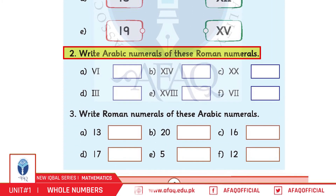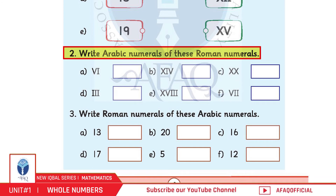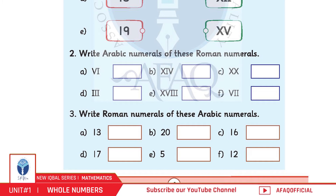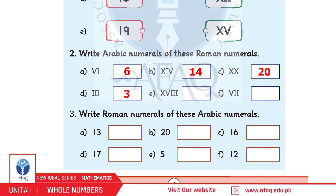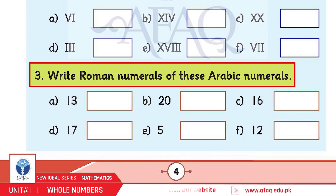Question number 2: Write Arabic numerals of these Roman numerals. A: 6. B: 14. C: 20. D: 3. E: 18. F: 7. Question number 3: Write Roman numerals of these Arabic numerals. A: 13. B: 20. C: 16. D: 17. E: 5. F: 12.